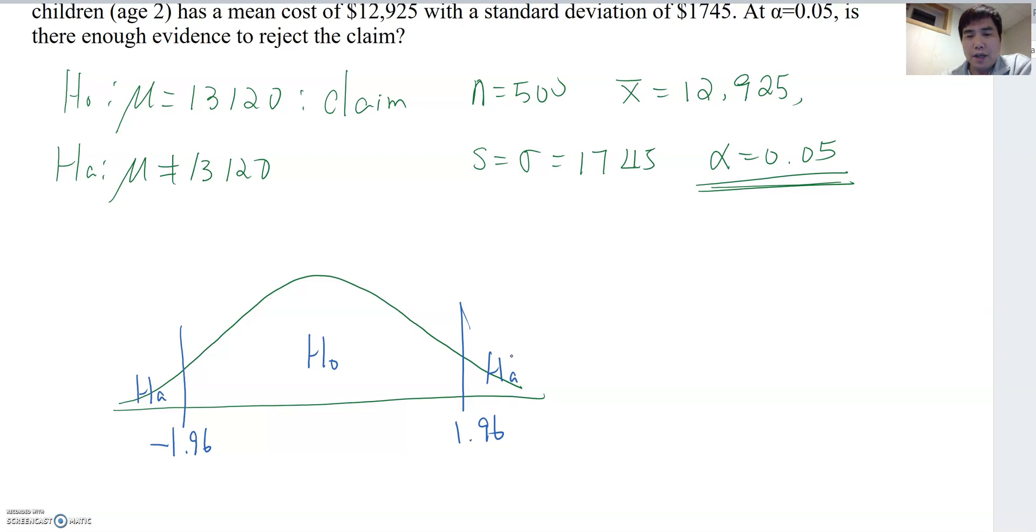Then let's find out Z score of the sample. So Z = (12,925 - 13,120) / (1,745 / √500). Then we got the Z score. So negative 2.498 something like that. So we can make 2.50. So negative 2.50. That will be our sample Z score. Now I'm going to bring this down to here.